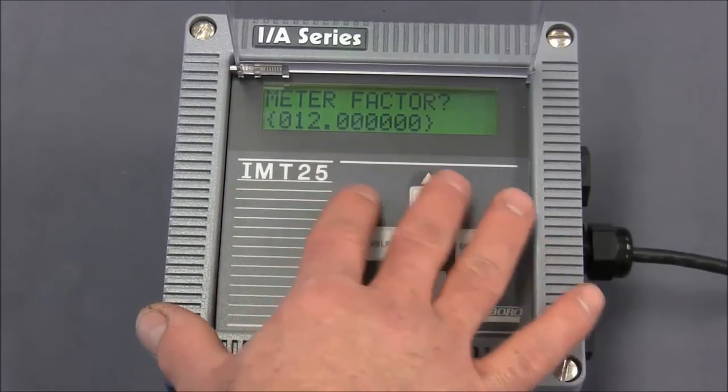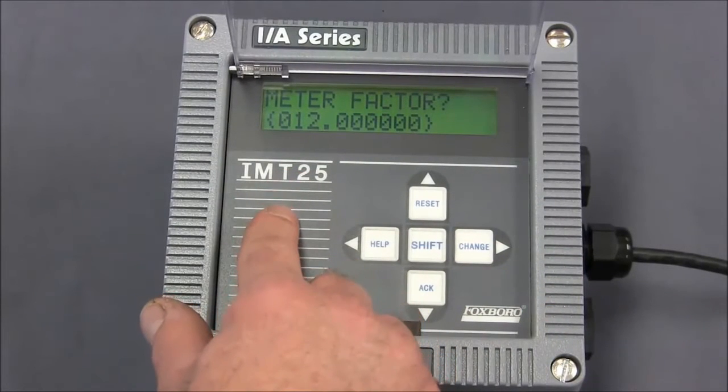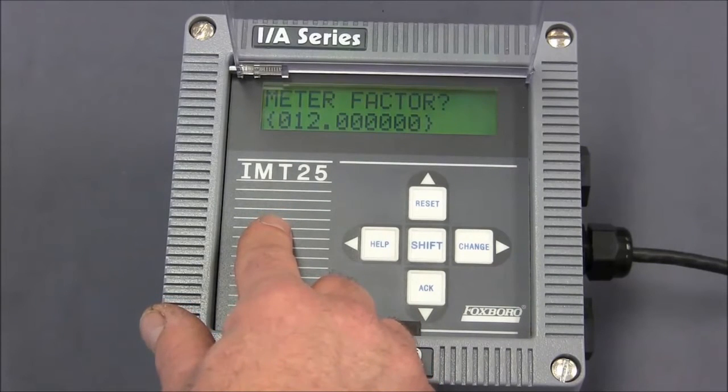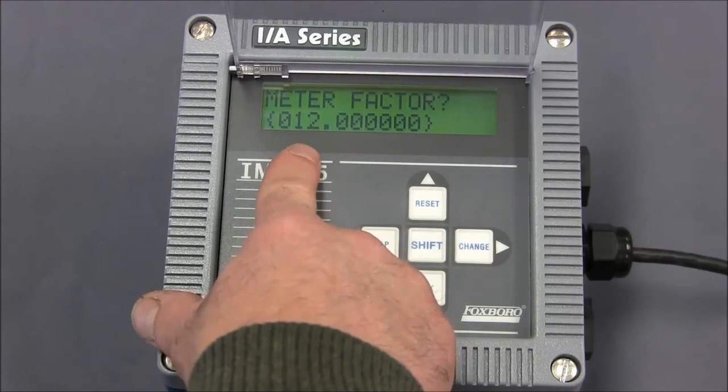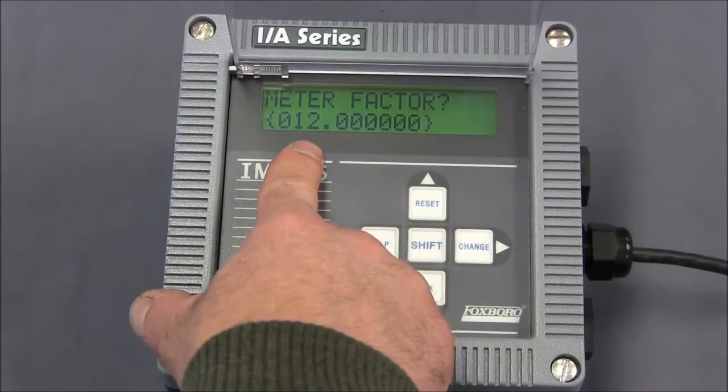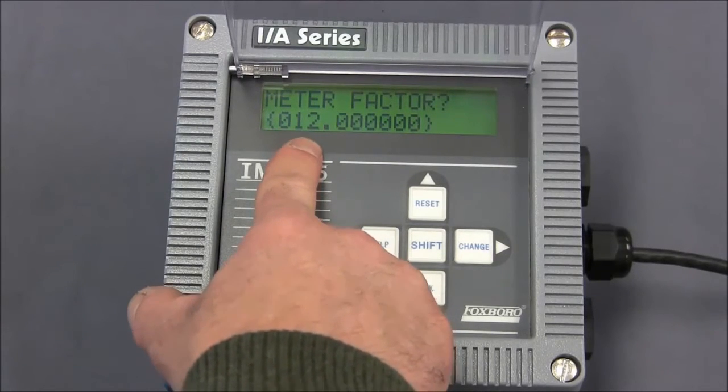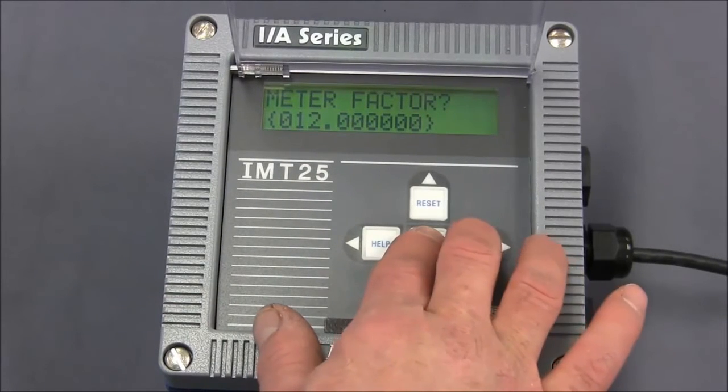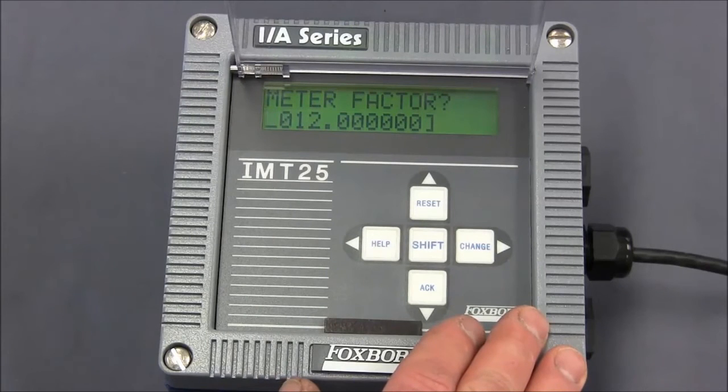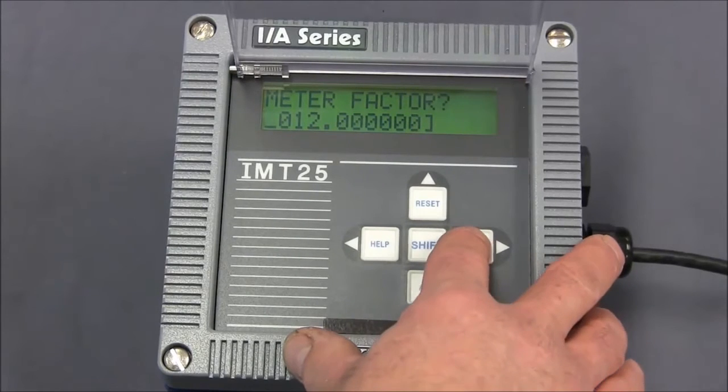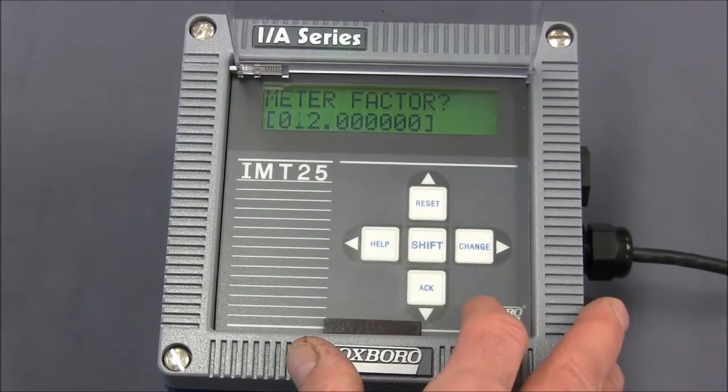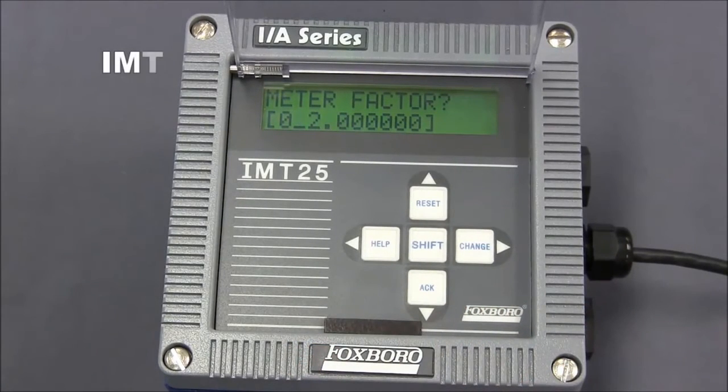Now, this is the meter factor that's currently entered into the transmitter. The default is 12, which represents the average calibration factor for a two-inch flow tube. To change this meter factor number from 12 to the meter factor that's stamped on your flow tube, you would simply do the shift and change keys together to get the transmitter into edit mode.